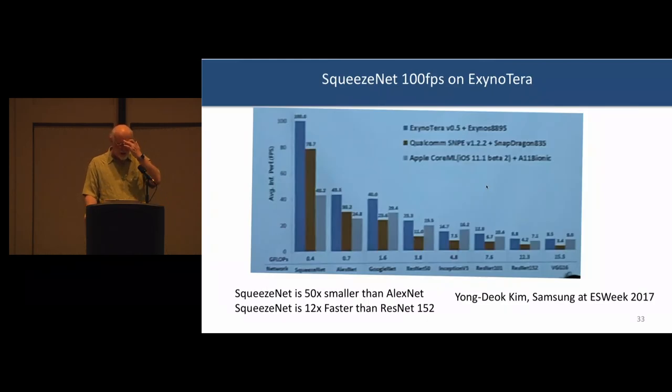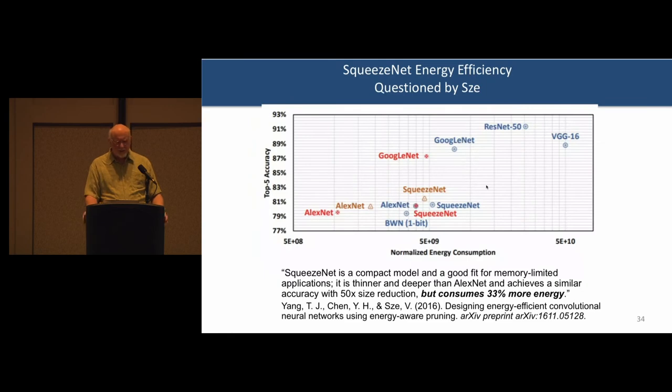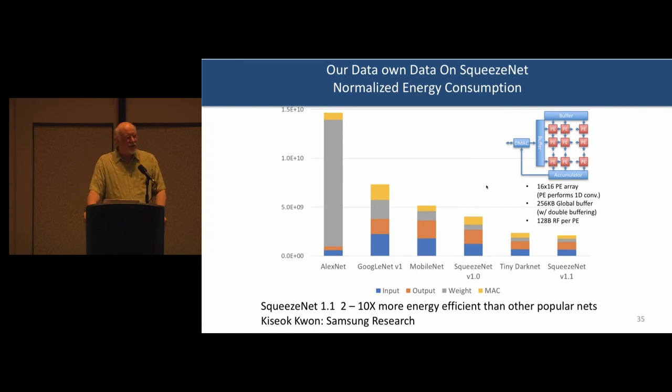I'm going to brag about SqueezeNet just a little bit here. Here's some work that was actually done by a group at Samsung in Korea. What you see along the y-axis is the frames per second, so more is better. And what you see along the x-axis is a variety of different nets. And what you see is that SqueezeNet getting 100 frames per second on the Exynos Terra processor that they put in their mobile phones. Now, I get some blowback. Vivienne gives a lot of talks. She's an excellent speaker and does a lot of homework. And she presents results with energy consumption on the x-axis, so farther to the right is worse. And makes a point of talking about how AlexNet is actually more energy efficient than SqueezeNet, which was kind of a shocker to us.